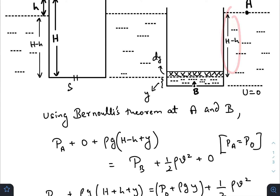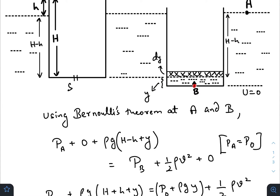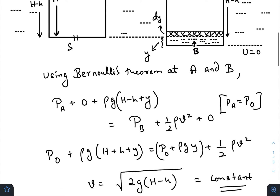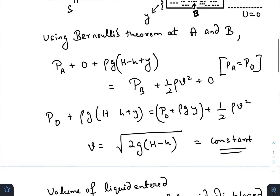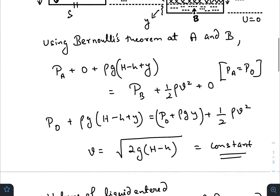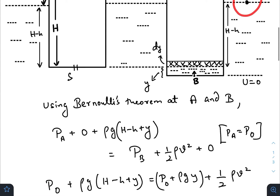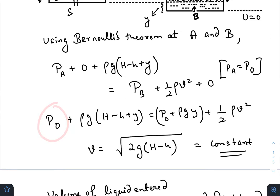At point B, where water enters the container with velocity v, the pressure is atmospheric pressure plus the pressure due to height y of liquid above, that is ρgy. The kinetic energy head is ½ρv², and the potential energy head is zero.